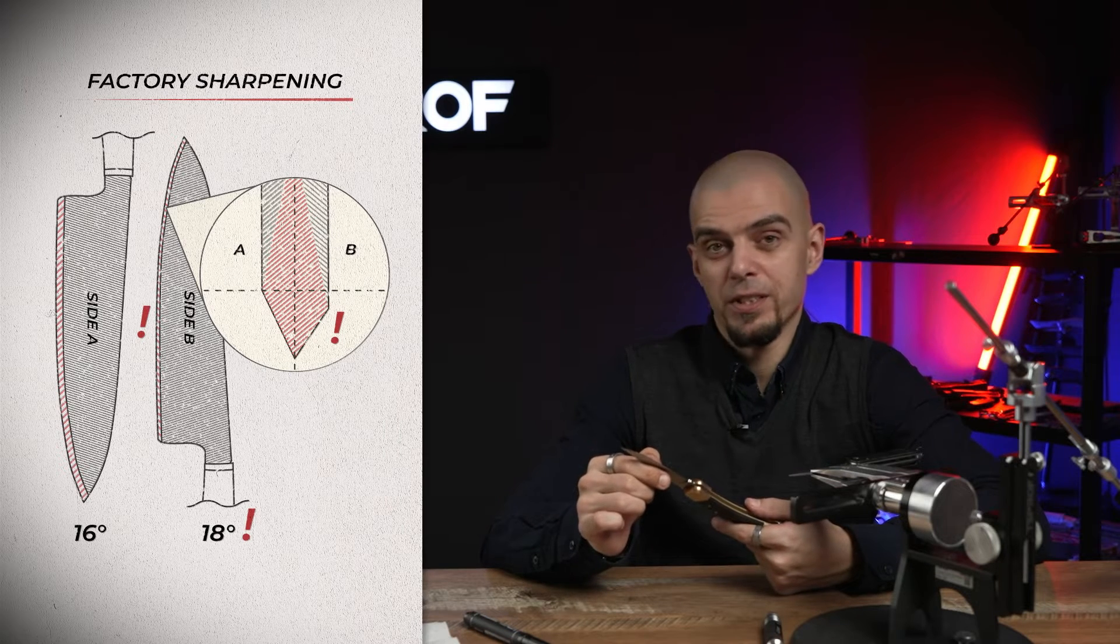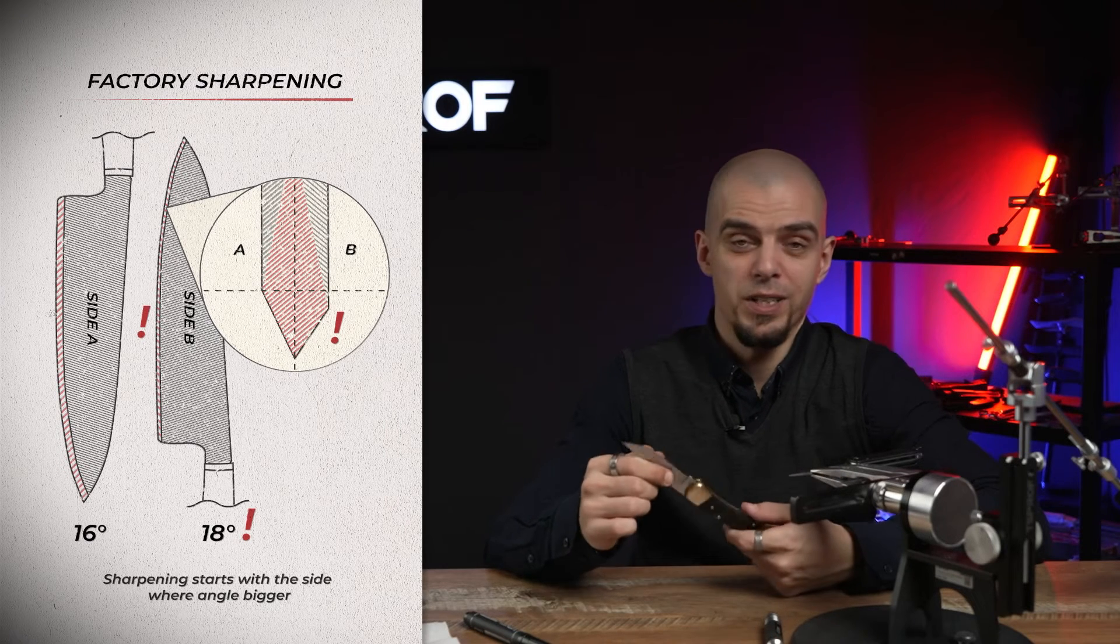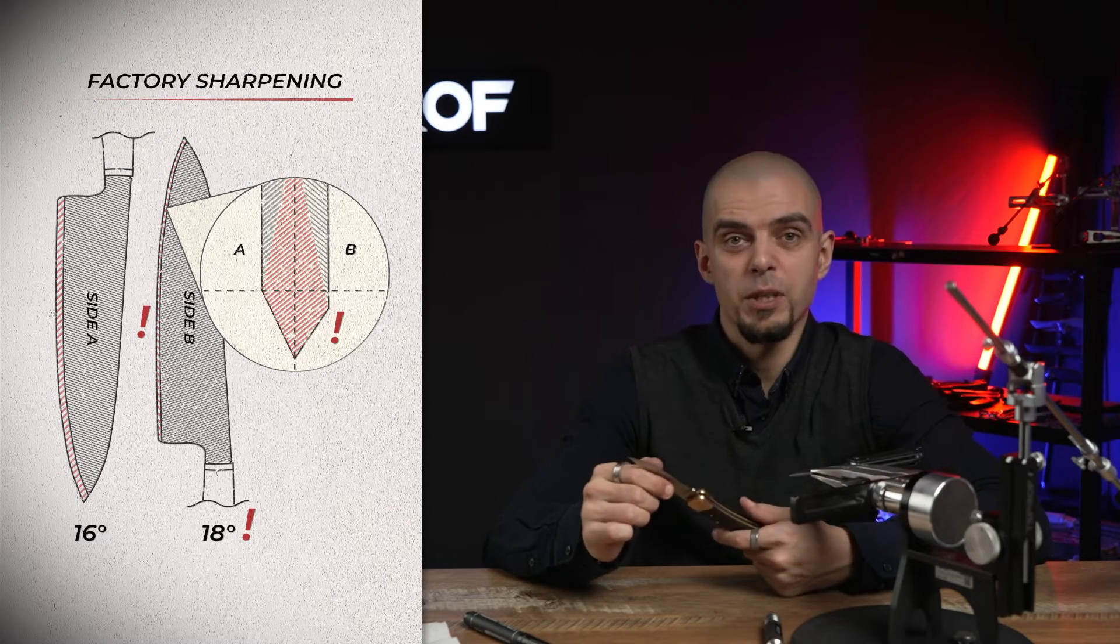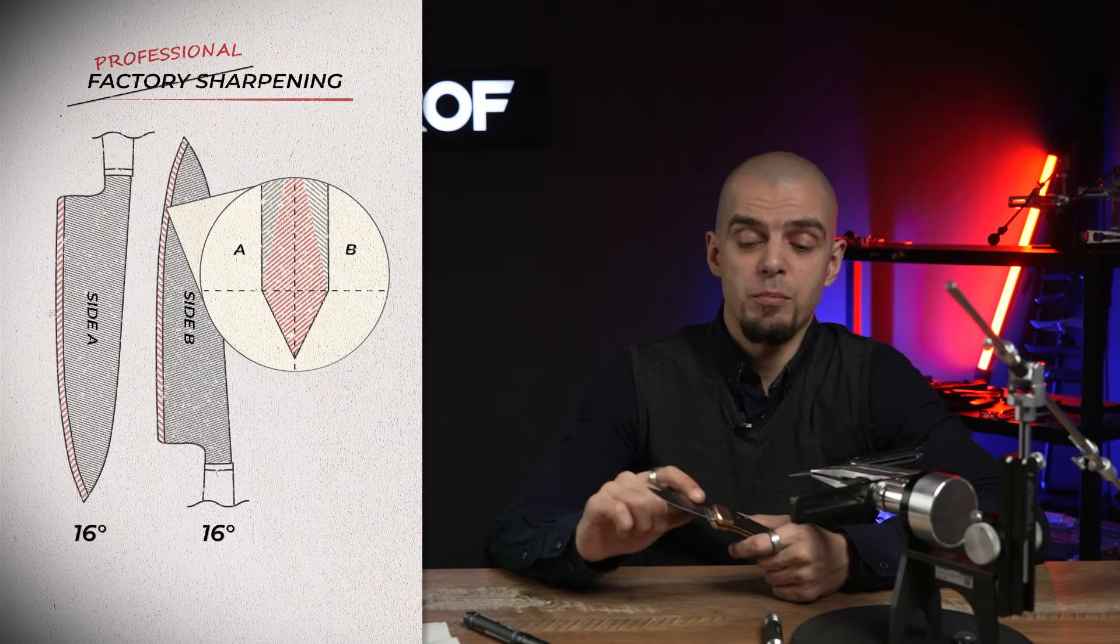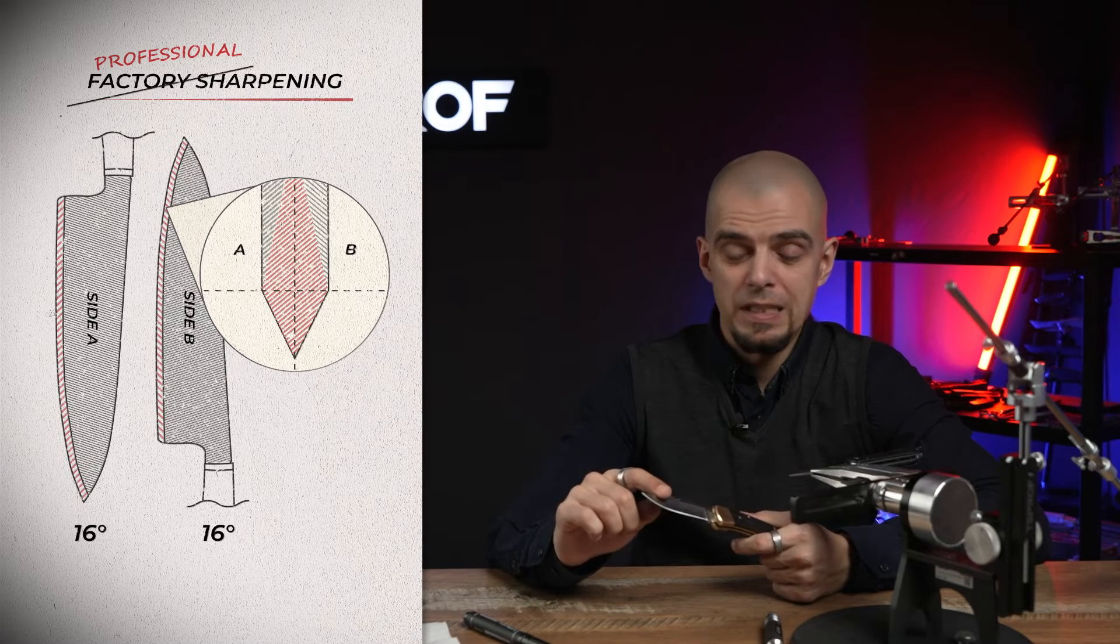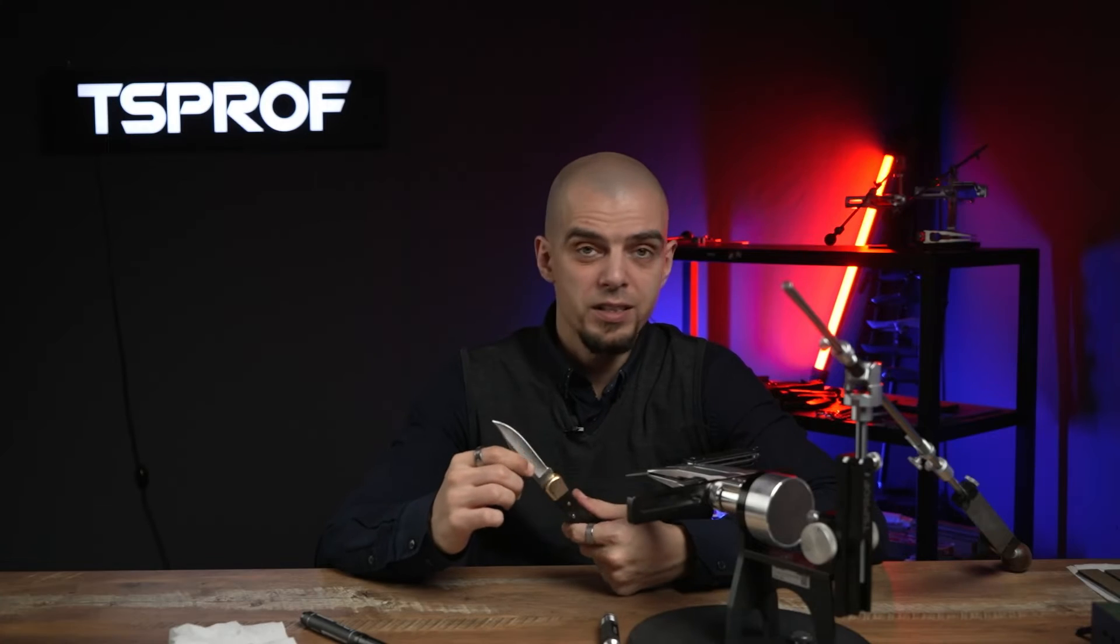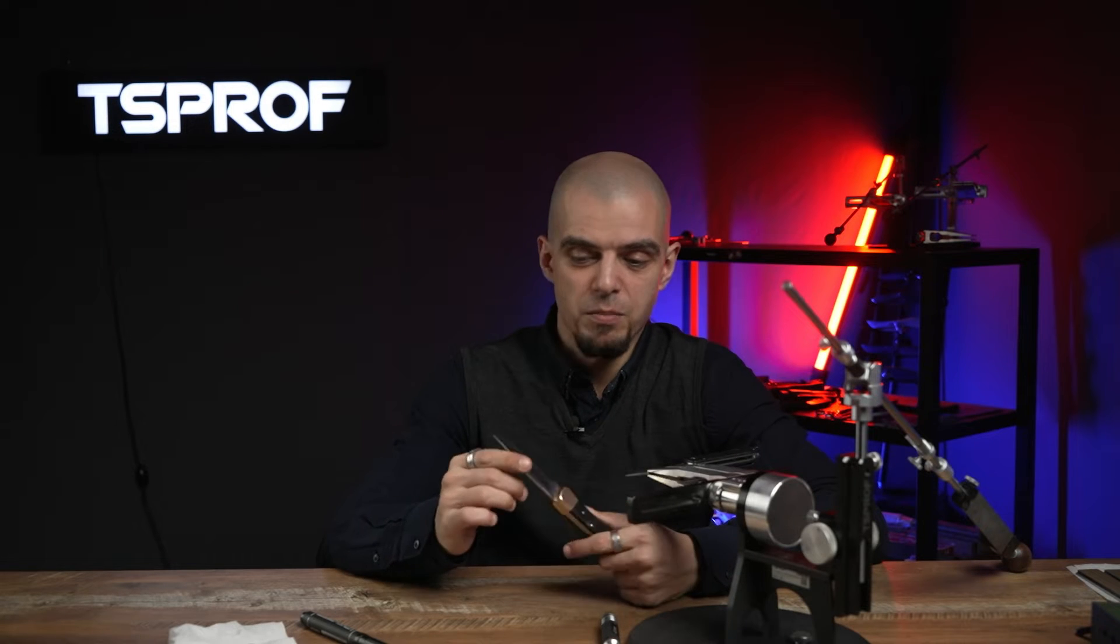It may have difference in angles from one side to another. It's pretty common because knives at the factory are mostly sharpened with the grinder and no one bothers to make a symmetrical edge.